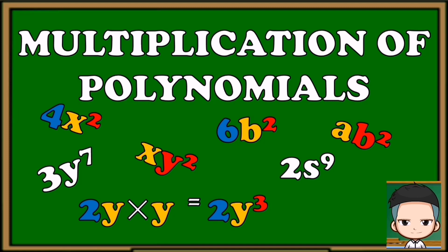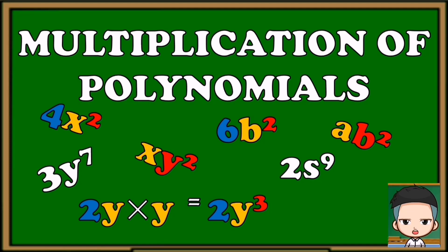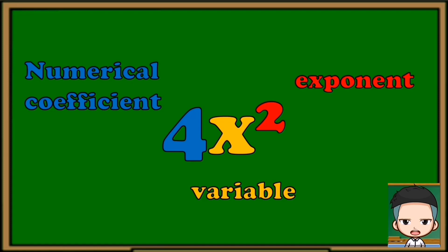In this tutorial I will be teaching you multiplication of polynomials, but before that let's have a short review first. Let us examine this polynomial — here we have 4x squared. In this example, 4 is called the numerical coefficient. The numerical coefficient is the number before the variable x. Here is the variable — a letter representation in a polynomial.